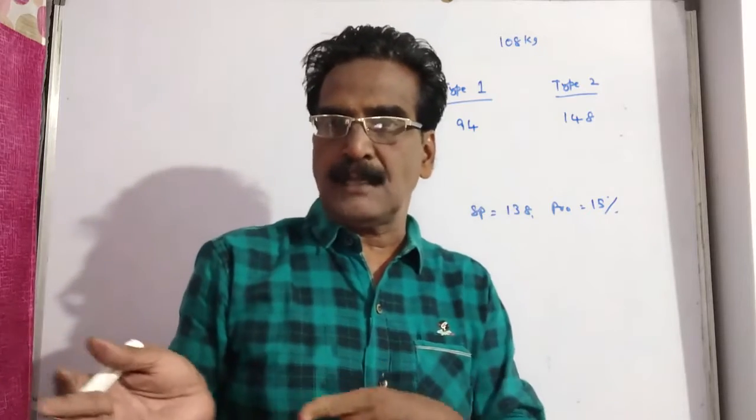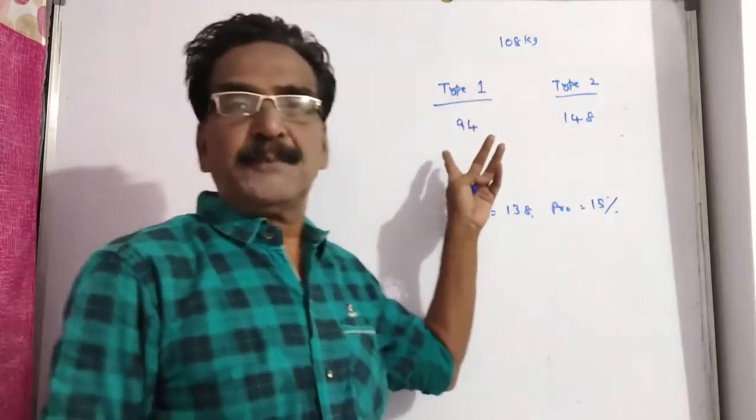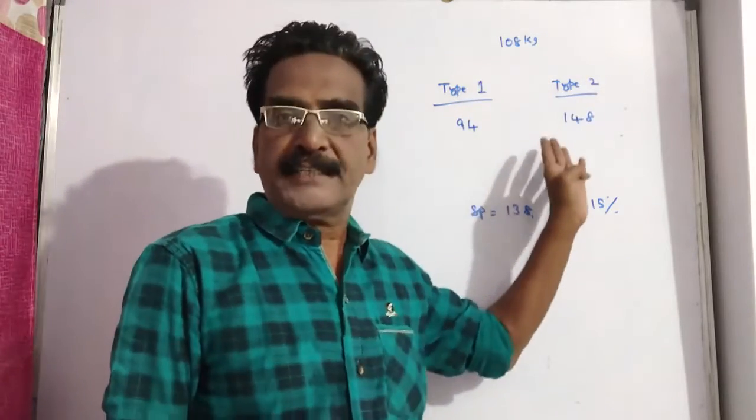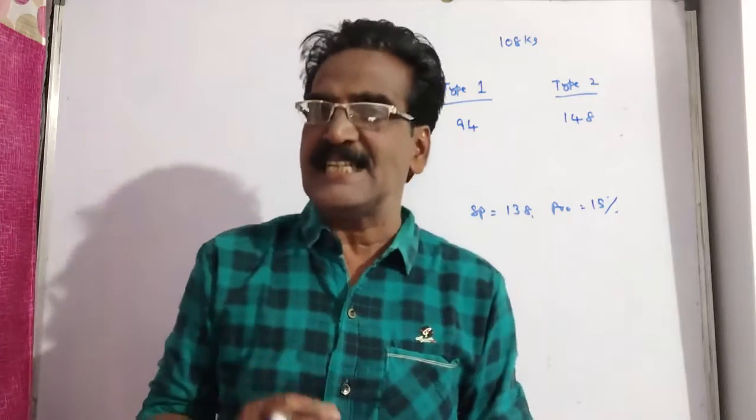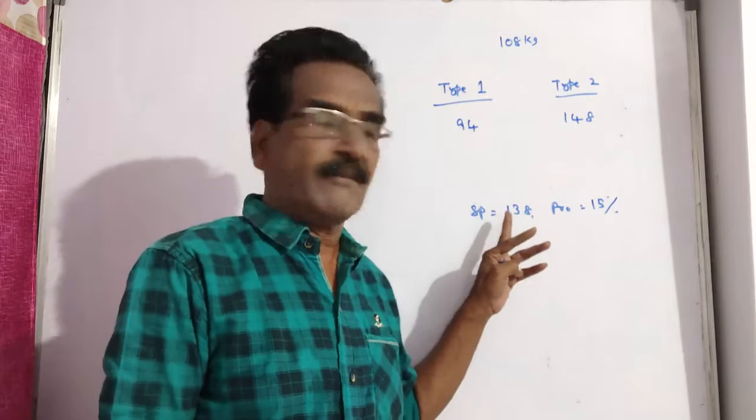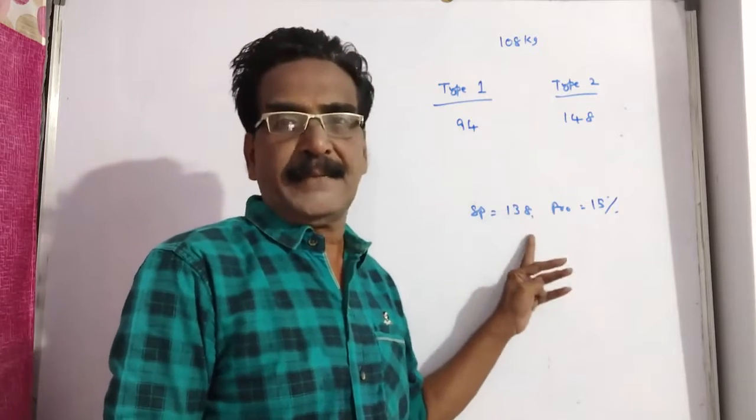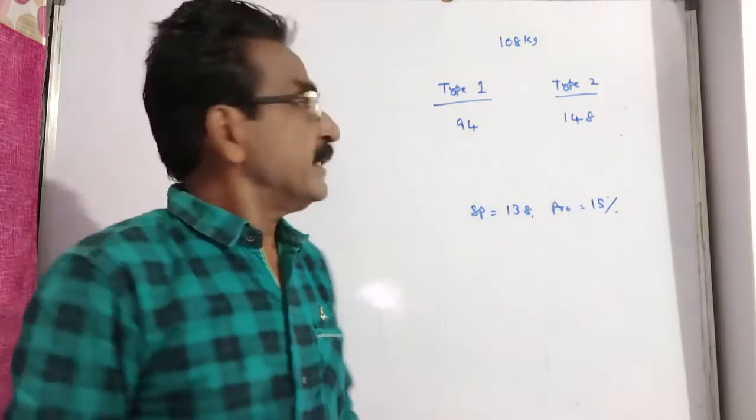We have two types of sugars, type 1 and type 2. Type 1 is 94 rupees per case and type 2 is 148 rupees per case. These two types of sugars are mixed and sold, and the mixture was sold at 138 rupees, thereby gaining 15% profit.